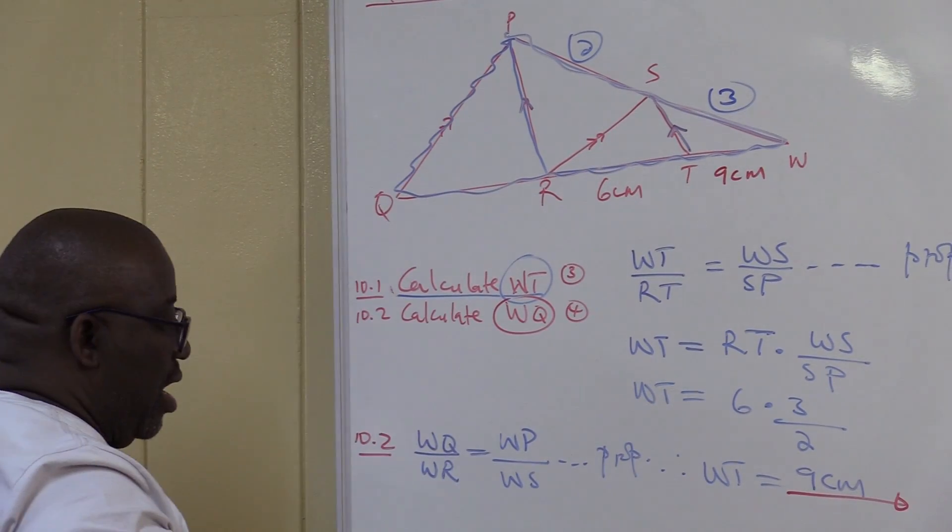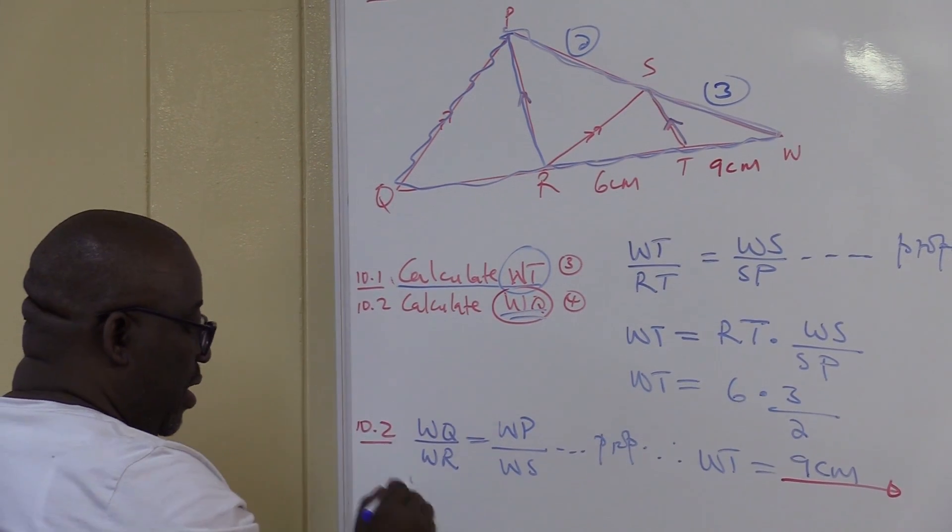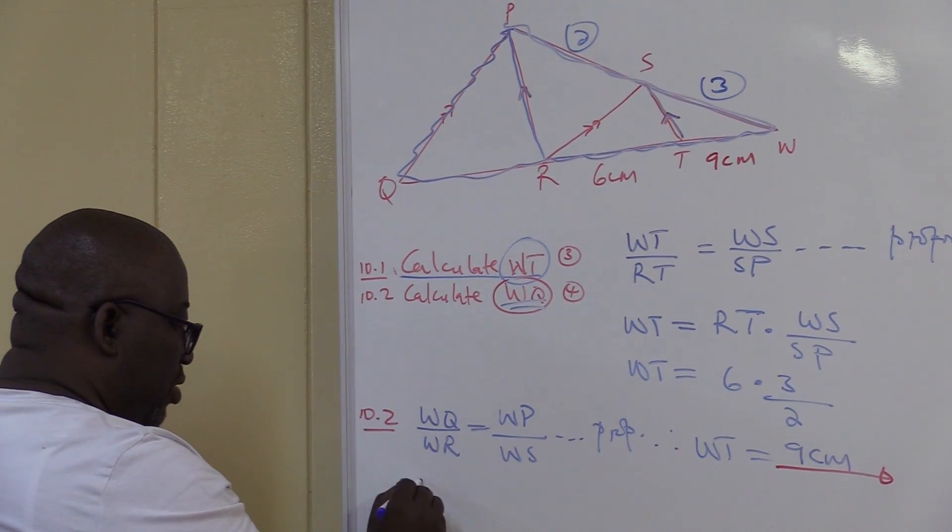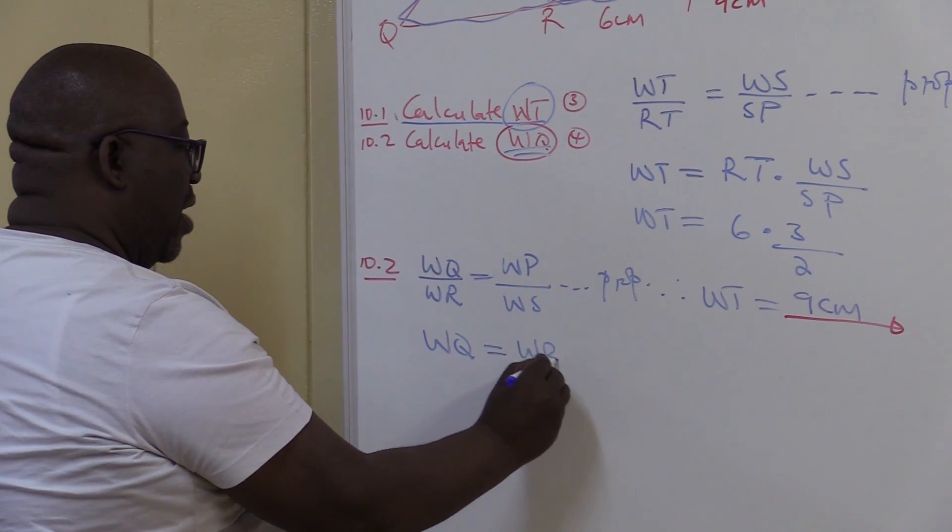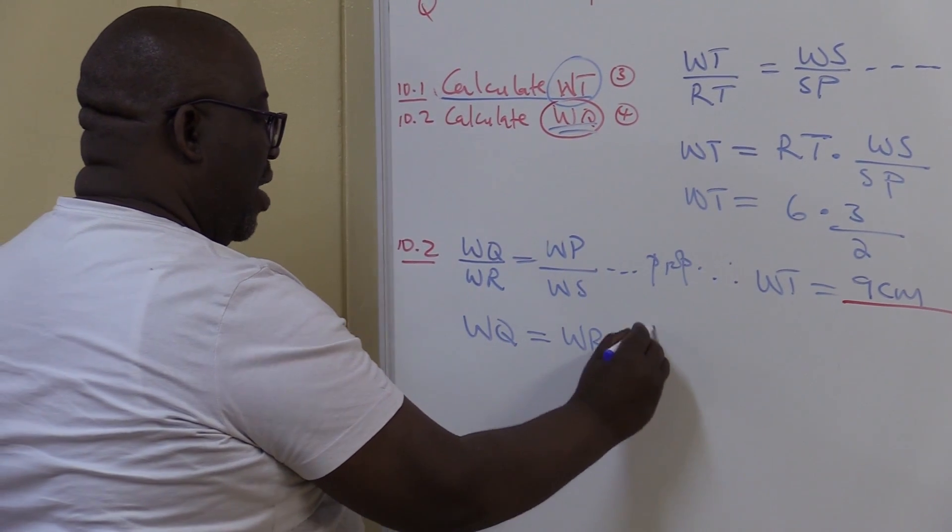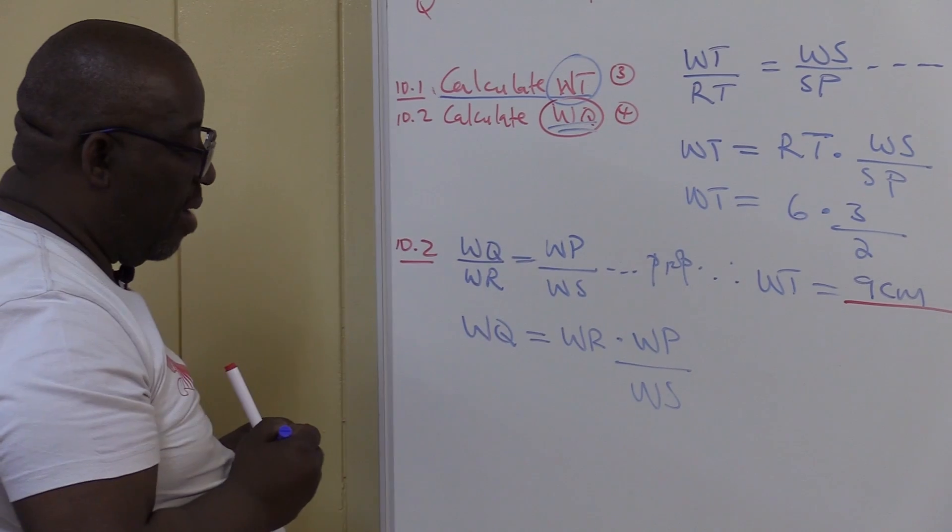I've got to make it the subject of my formula. WQ I cross multiply. So my WQ will be equal to WR times WP over WS. I've just manipulated my formula.